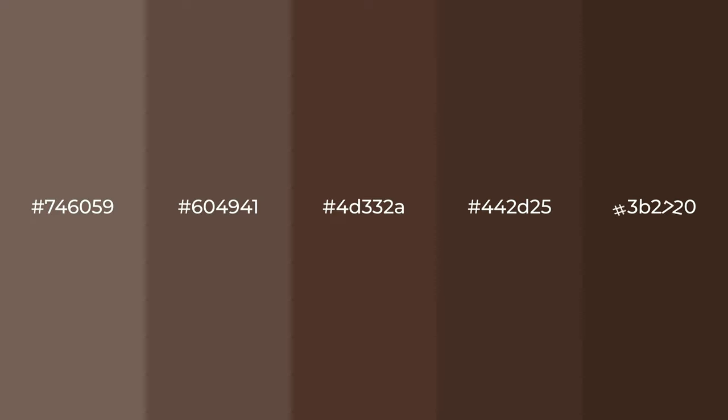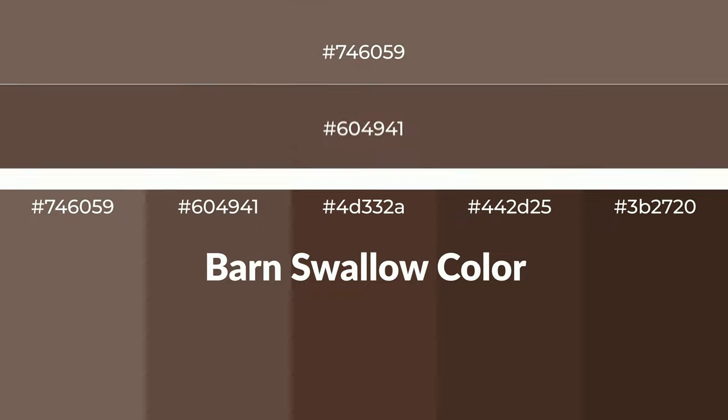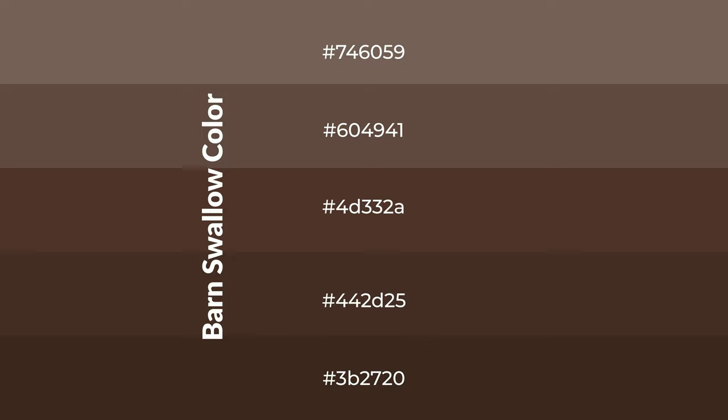Warm shades of barn swallow color with red hue for your next project. To generate tints of a color, we add white to the color. Tints create light and exquisite emotions. To generate shades of a color, we add black to the color, and it is used in patterns, 3D effects, and layers. Shades create depth and drama.